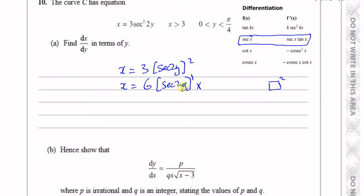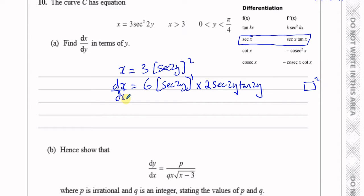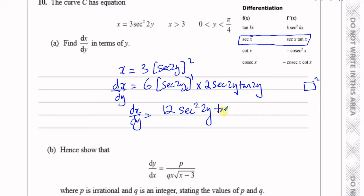So now I have to multiply by the differential of sec(2y), which gives me sec(2y) times tan(2y). But then I have another function inside this function — I have 2y inside. So I have to multiply by the differential of 2y, which is 2, since we're differentiating with respect to y. So I end up with dx/dy equal to 6 times 2, which is 12, and I've got sec(2y) times sec(2y), which is 12 sec²(2y) tan(2y).